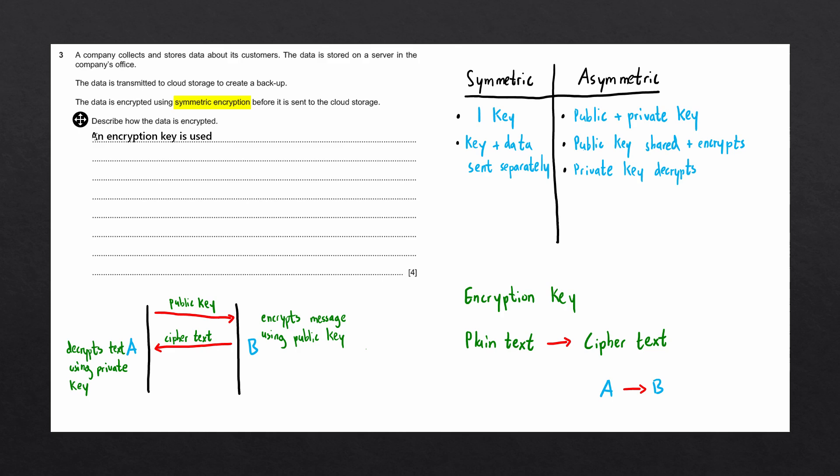The first thing we can mention is that an encryption key is used alongside an encryption algorithm. These are then applied to plain text. This process converts the plain text into ciphertext. And we can mention that the same key is used to decrypt the text. Bear in mind, we only want to describe how the data is encrypted and not how the data is transmitted between the computer and cloud storage. So make sure your answer only consists of steps relating to how data is encrypted.